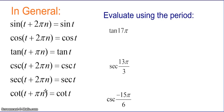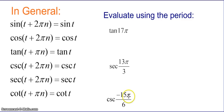Now I want you to use the period to evaluate the tangent of 17π, the cosecant of 13π over 3, and the cosecant of negative 15π over 6. Pause the video and unpause when you're ready to check your work.